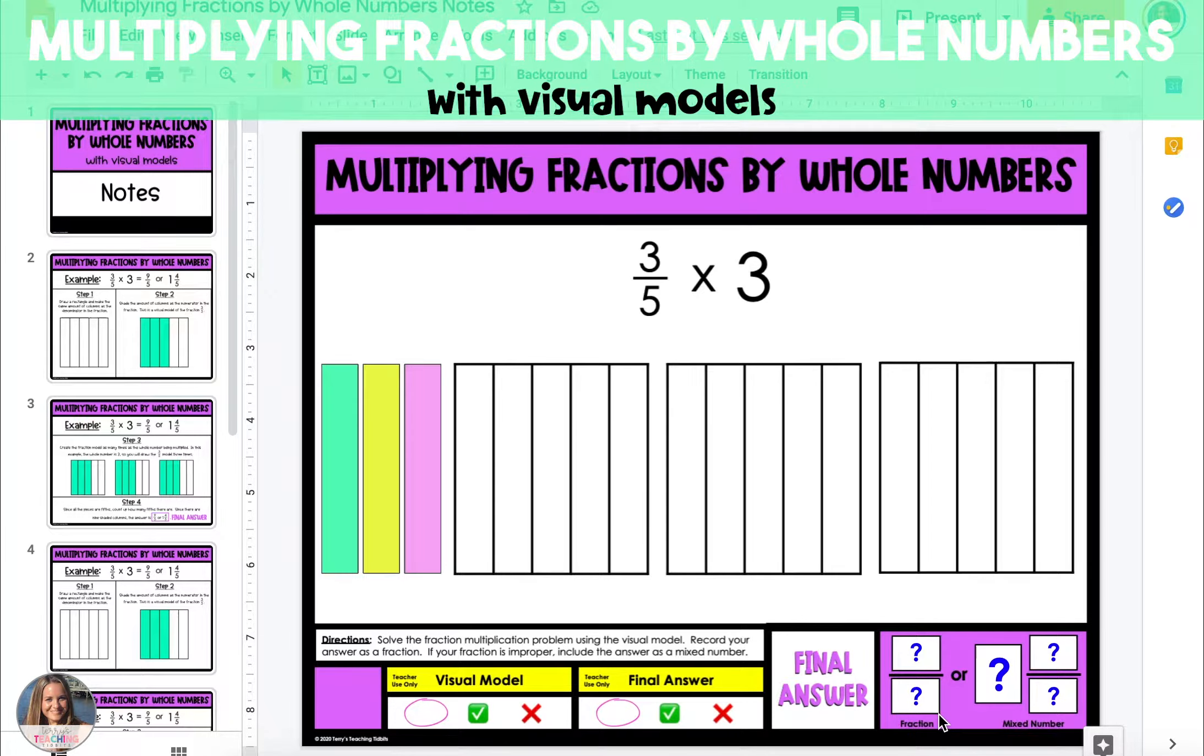In both example problems, the first thing we're going to do is create a fraction model to represent the fraction that's being multiplied. Since our fraction is 3 fifths, we're going to create a rectangle with five columns to represent the fifths. Because our fraction is being multiplied by the whole number 3, we're going to create three models of fifths.